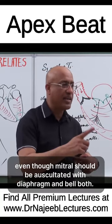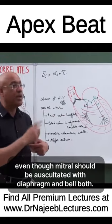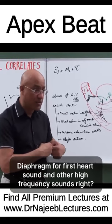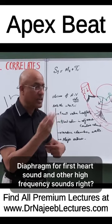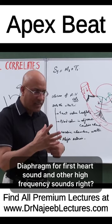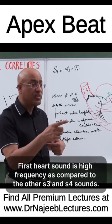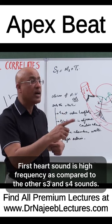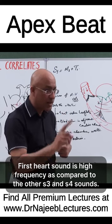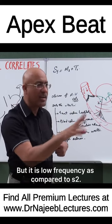Even though the mitral area should be auscultated with both the diaphragm and the bell — the diaphragm for the first heart sound and other high frequency sounds. The first heart sound is high frequency compared to S3 and S4, but it is low frequency compared to S2.